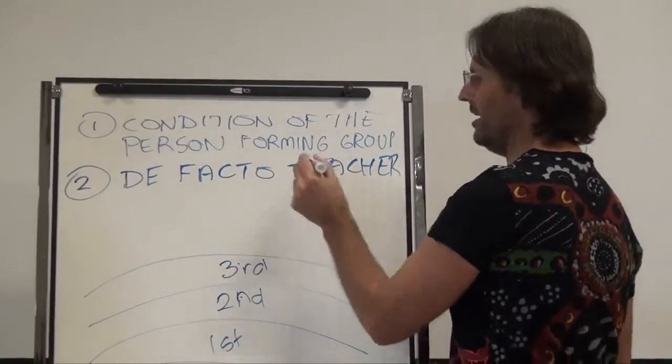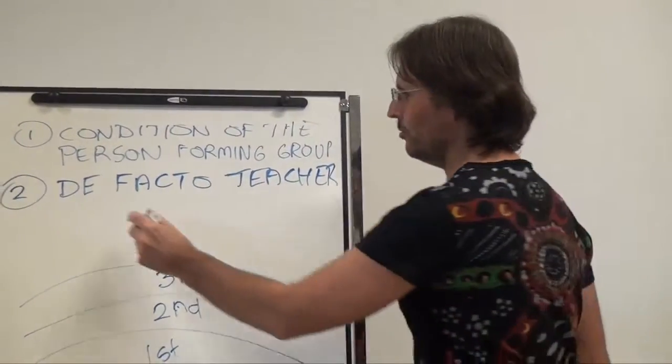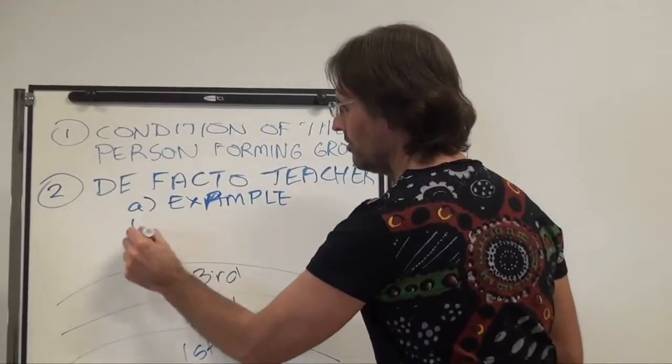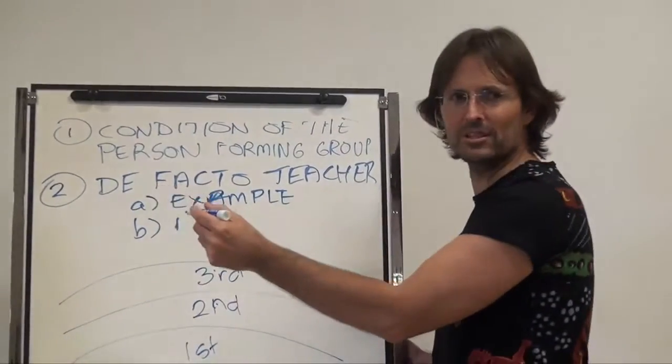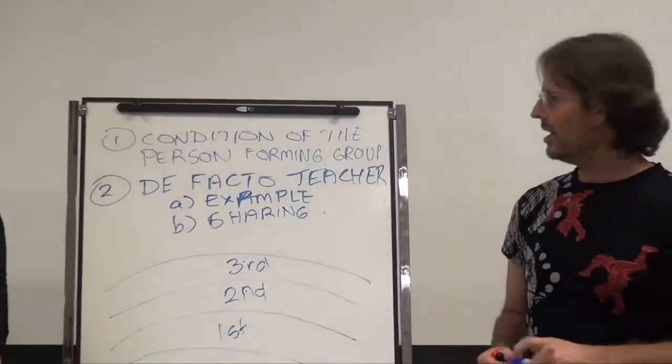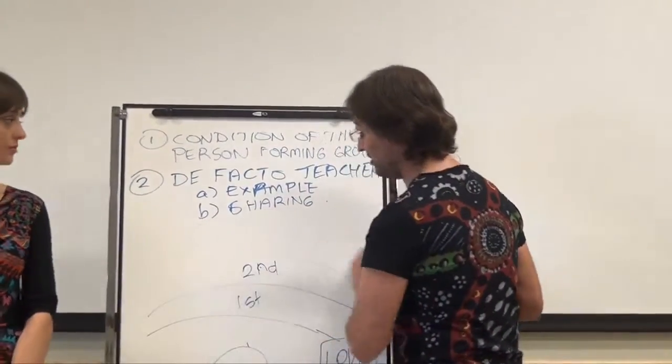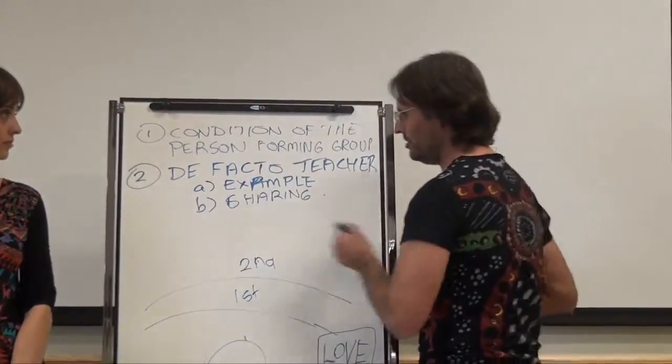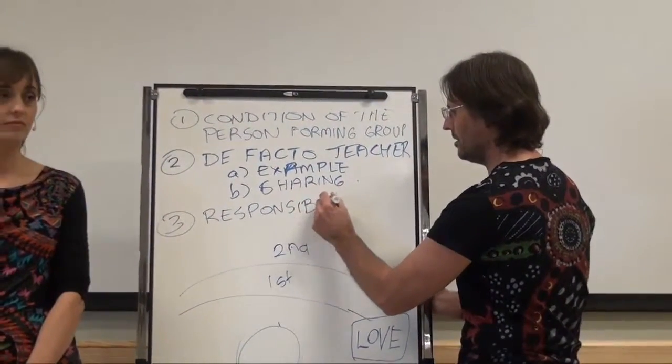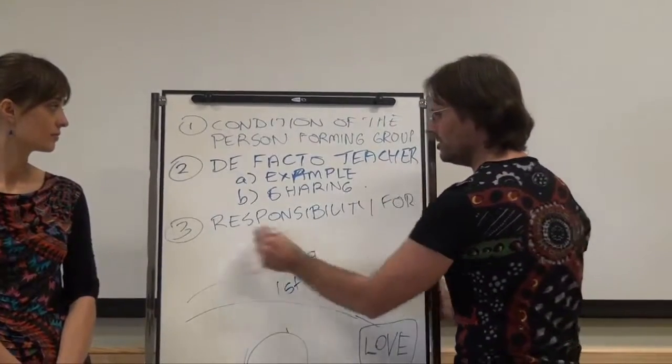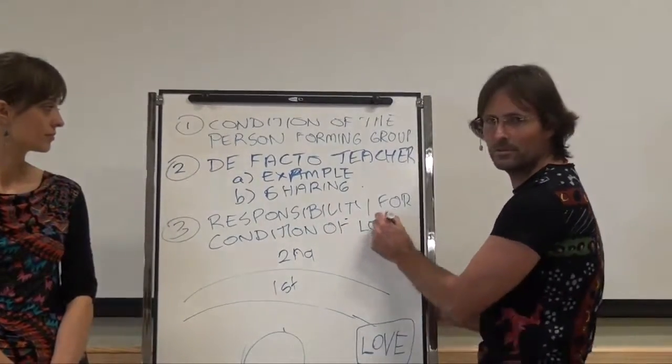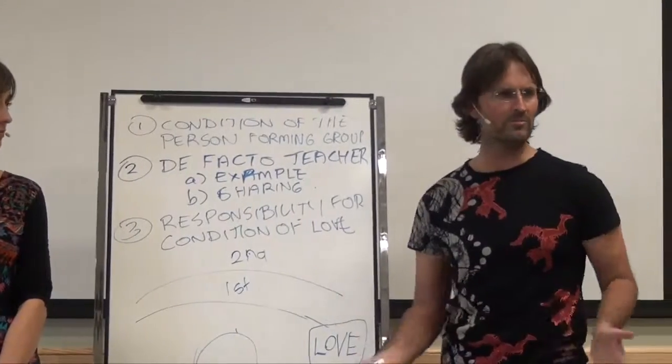Your example is going to determine greatly what people are going to do, feel like they can get away with, feel like they have to conform to. Your example is going to have a very large effect. So the person forming the group is a, you could say de facto if you like, teacher of the group through their example in particular number one. So A, through example. And B, through their actual words, their actual teachings, whatever they decide to share through their sharing. And also if we look at it, the person who forms a group has from God's perspective the responsibility for the condition of love.